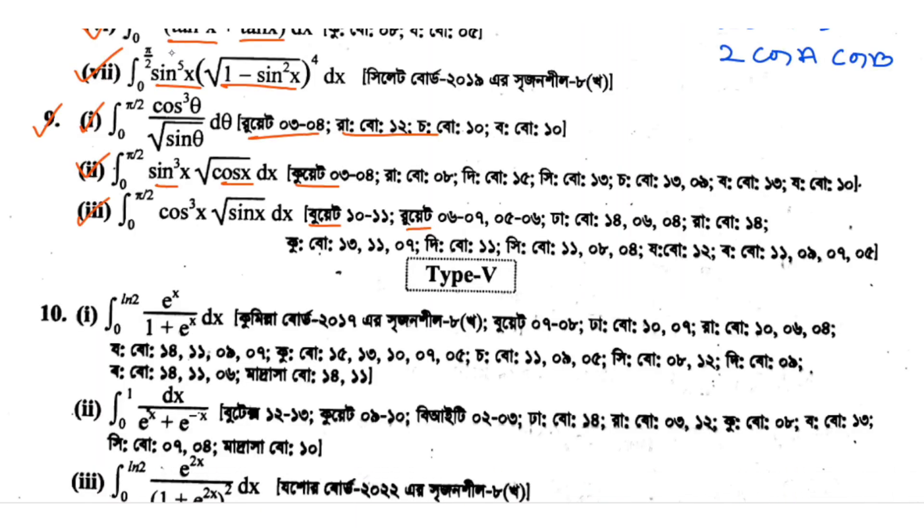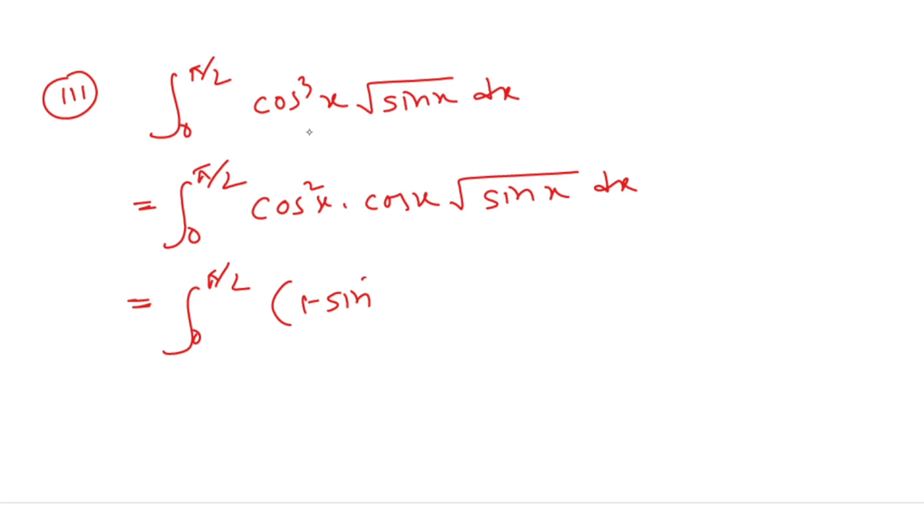Now for the integral from 0 to π/2 of cos cubed x over root sin x dx. I'll write this as cos squared x times cos x over root sin x dx. Using 1 minus sin squared for cos squared, we get (1 minus sin squared x) cos x over root sin x dx.